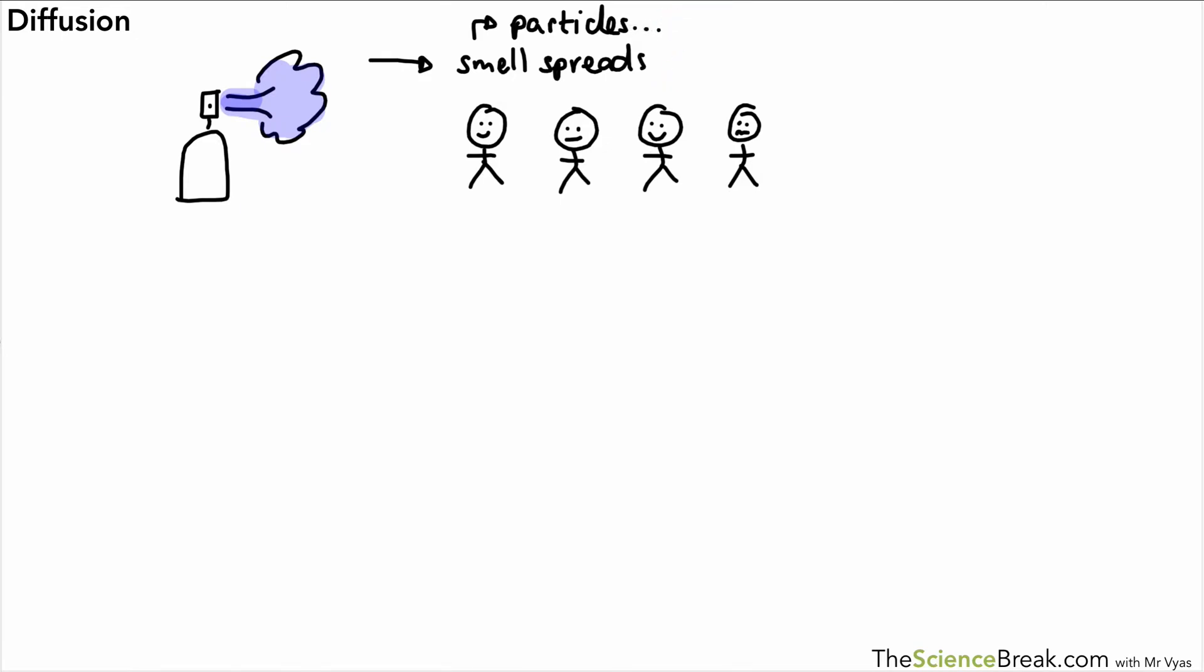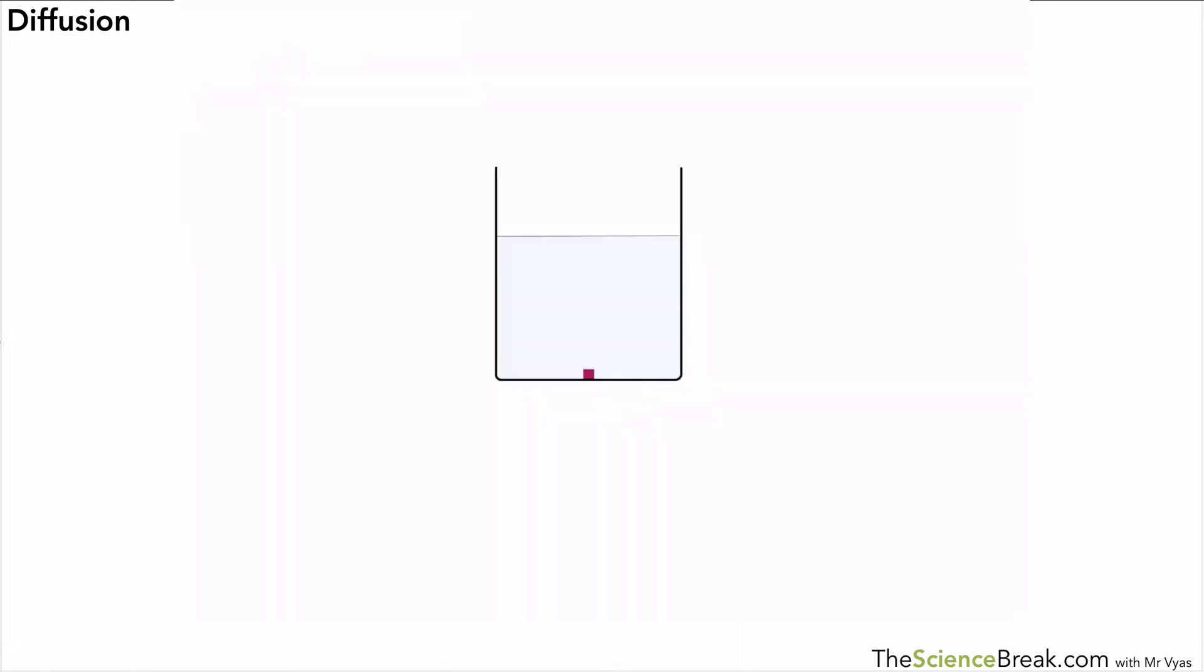We could look at a more accurate version of diffusion that is more likely to happen in living things. We can demonstrate it by showing a beaker of water with a crystal at the bottom. That crystal can dissolve in the water, and if you left it over a period of a few hours, the crystal would dissolve and spread into the water in the beaker. This is another way of seeing how diffusion works.